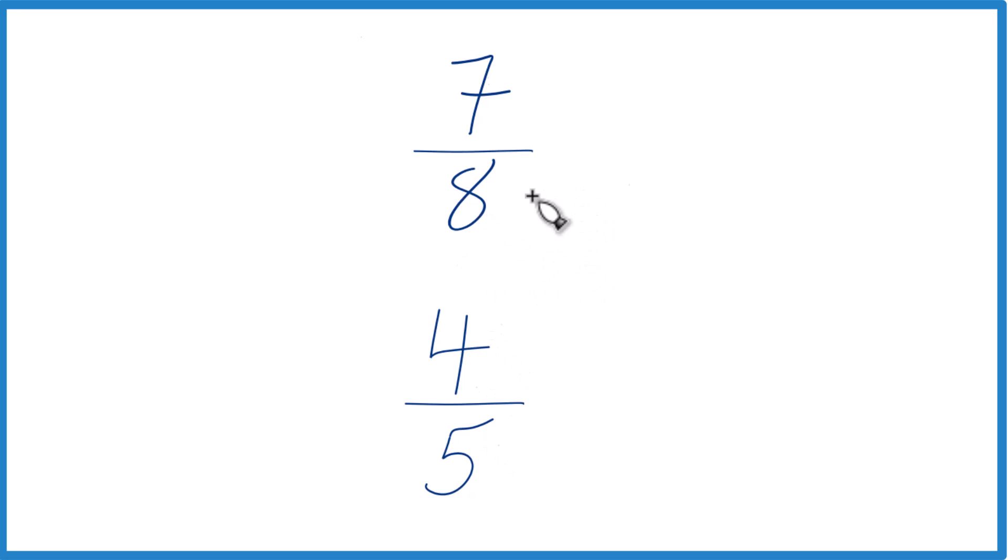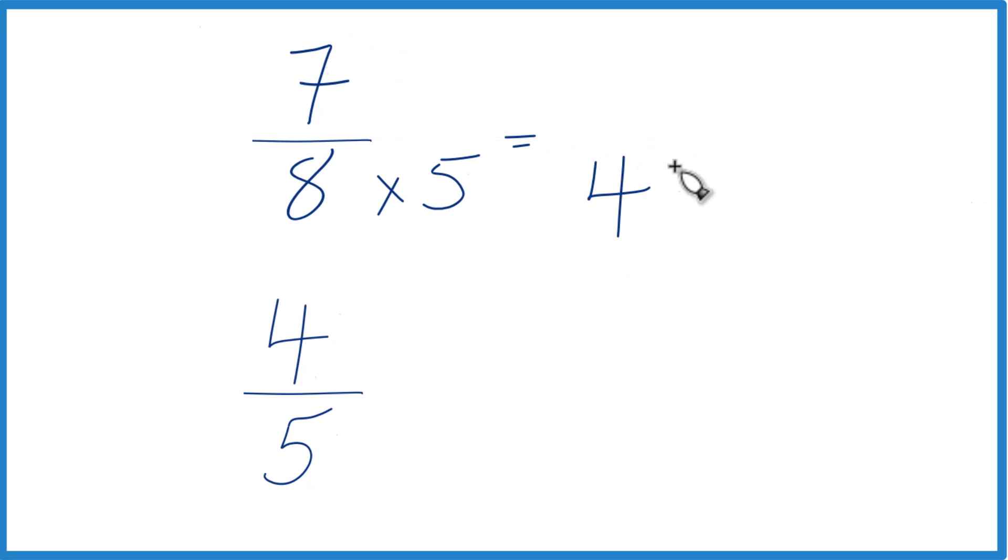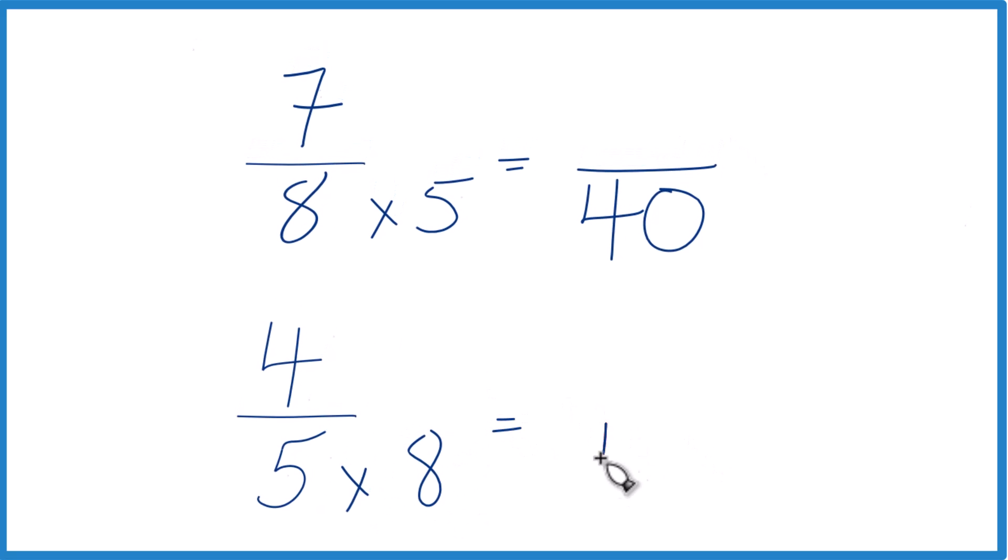Let's take 8 times 5 because 8 times 5, that equals 40. And then down here, I could take 5 times 8 because 5 times 8, that equals 40. And now I have a common denominator.